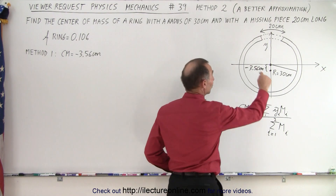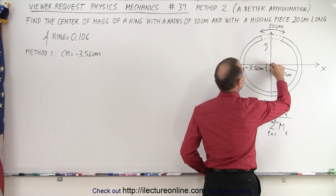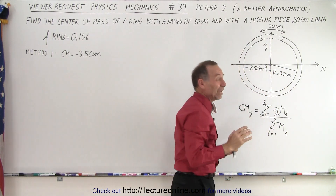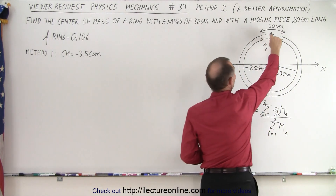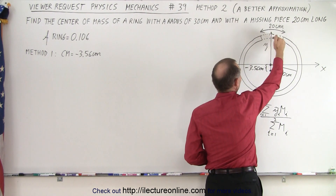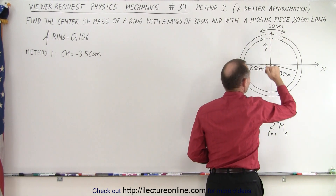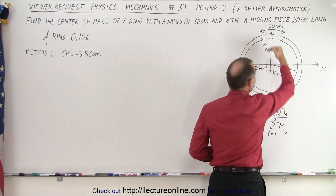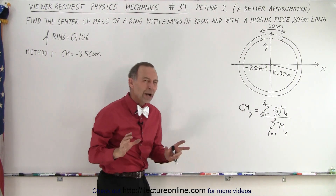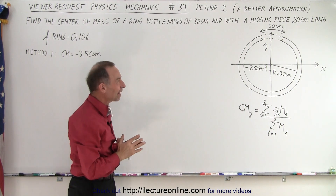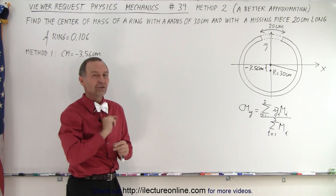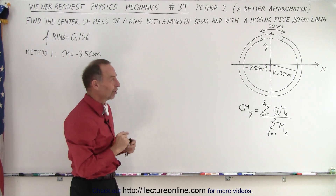In other words, the missing piece on the ring was considered to be at exactly 30 centimeters away from the origin. We know that's not really the case because some of the missing ring, since there's a curvature there, is actually closer in the y direction than 30 centimeters from the origin. So we didn't quite use the correct value. We might be able to use a better approximation still without using calculus, so let me show you.